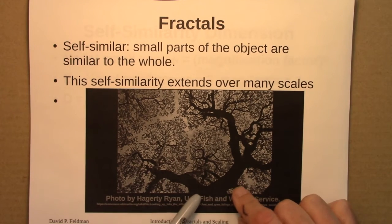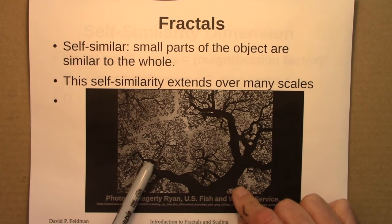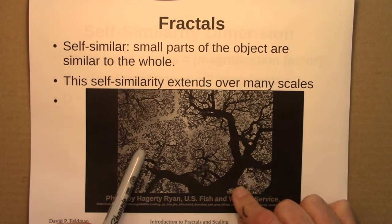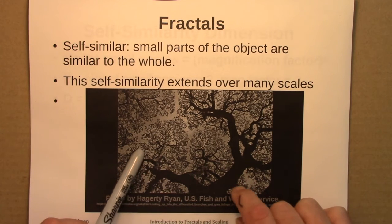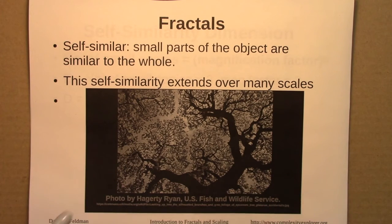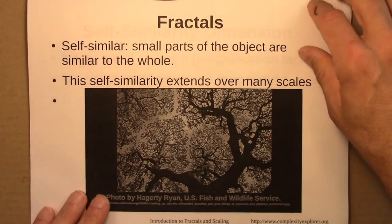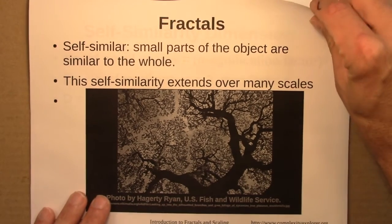So branches, off of which are branches, off of which are branches, and maybe branches smaller still. If that self-similarity is over several scales, we would say that we're working with a fractal.